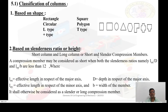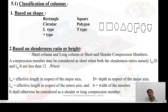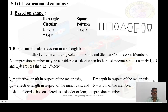Second, based on slenderness ratio or height — short column and long column are short and slender compression members. A compression member may be considered short when both the slenderness ratios lex/d and ley/b are less than 12. When lex/d and ley/b are greater than 12, we call it a long column. The short column usually fails by crushing and the long column usually fails by buckling.